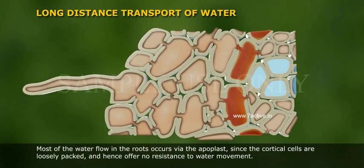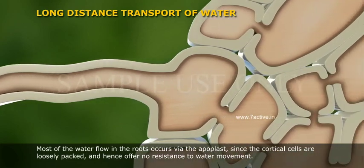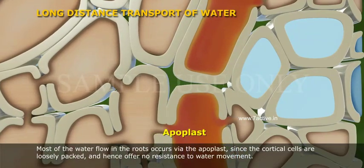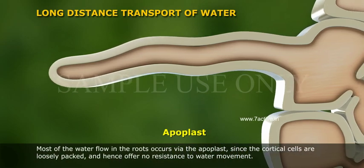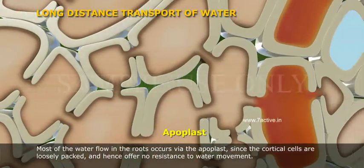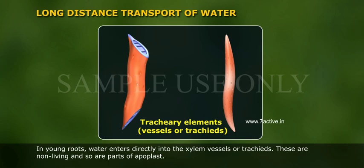Most of the water flow in the roots occurs via apoplast, since the cortical cells are loosely packed and hence offer no resistance to water movement. In young roots, water enters directly into the xylem vessels or tracheids. These are non-living and so are parts of the apoplast.